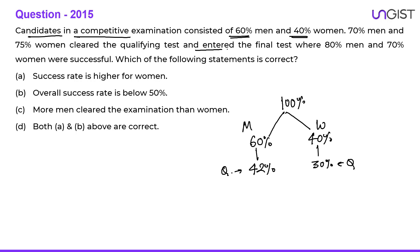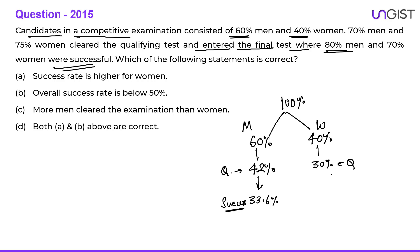After that they entered the final test where 80 percent of men and 70 percent of women were successful. 80 percent of 42 is 33.6 — because 40 into 0.8 is 32, plus 1.6 equals 33.6. These are the finally successful male candidates. And 70 percent of 30 is 21. So 21 percent of females were successful.